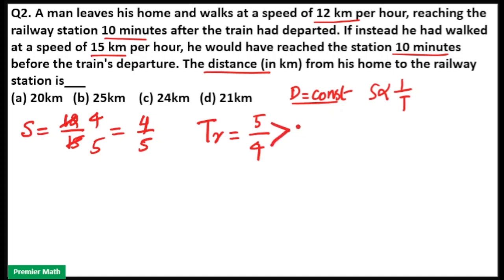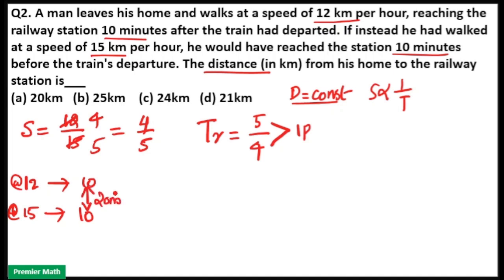The difference between the 5-part and 4-part time is 1 part. At 12 km per hour he is 10 minutes late, and at 15 km per hour he is 10 minutes early. So the difference between 10 minutes late and 10 minutes early is 20 minutes. For example, if the train departs at 9:00 AM, arriving at 9:10 AM and 8:50 AM gives a difference of exactly 20 minutes.